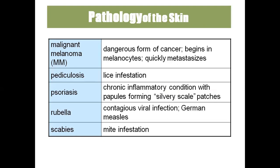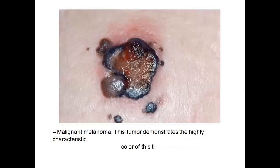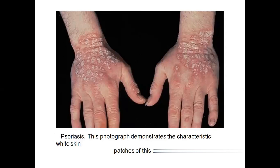Gangrene is death of cells because of lack of blood supply. Ichthyosis means the skin becomes dry, scaly, and keratinized. Impetigo is a severe bacterial infection where the person has pustules that rupture and are very painful. Kaposi sarcoma is skin cancer seen in AIDS patients. Malignant melanoma is a dangerous form of cancer beginning in the melanocytes and quickly spreading to other areas — unlike basal cell carcinoma, malignant melanoma is highly cancerous.